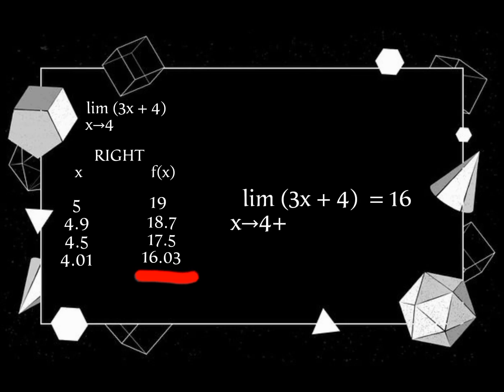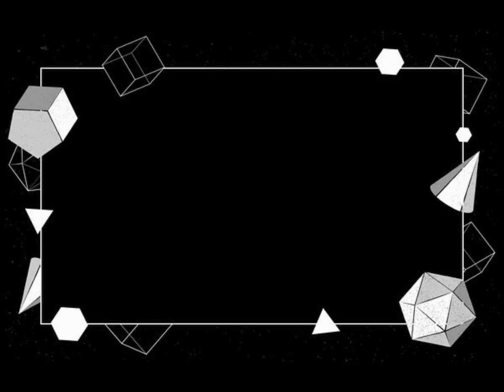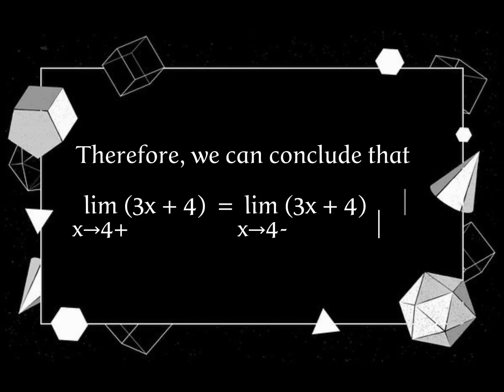Therefore, the limit of 3x plus 4 as x approaches 4 from the right is equal to 16. Therefore, we can conclude that the limit of 3x plus 4 as x approaches 4 from the right is equal to the limit of 3x plus 4 as x approaches 4 from the left.